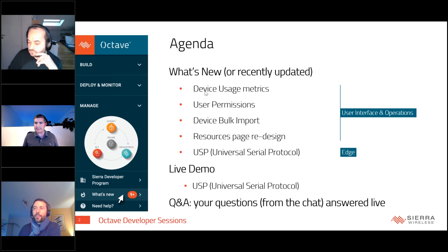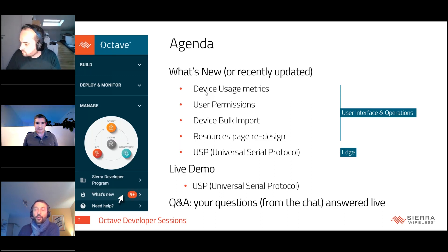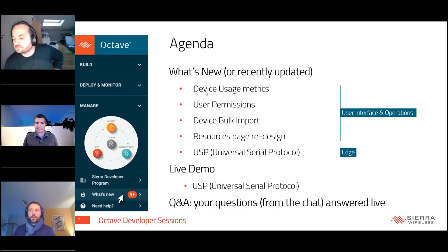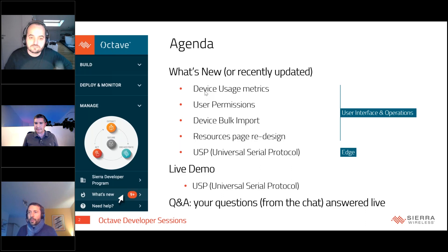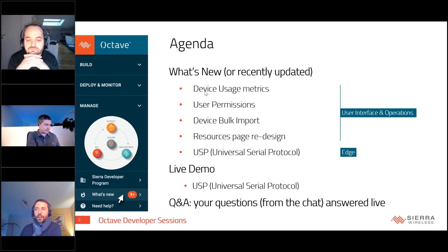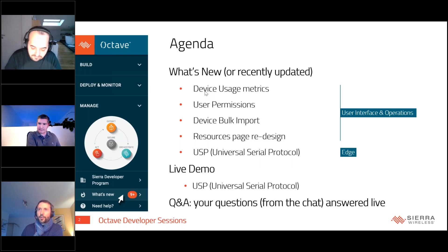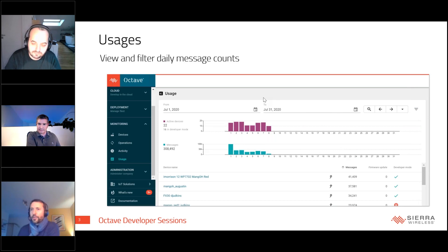The first feature is device usage metrics — looking at data and message consumption of your devices from the Octave UI. There is a new panel in the monitoring part of the Octave UI where you can display your device's activity over given periods of time. This new section is provided in the Deploy and Monitor section — just select Usage.